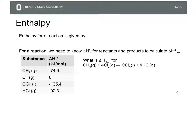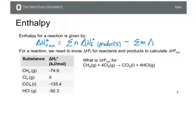Here's an example of a calculation you should have seen before in terms of enthalpy for a chemical reaction. For a reaction, the enthalpy is delta H naught — naught stands for standard conditions, standard temperature and pressure, 25 degrees Celsius and one atmosphere. Delta H for a reaction equals the sum of the moles times delta H of formation for the products, minus the sum of the moles times the delta H of formation for the reactants.